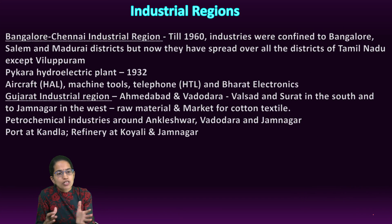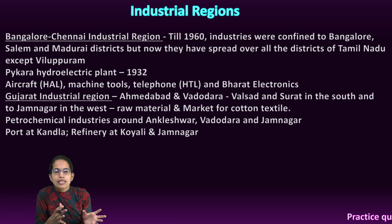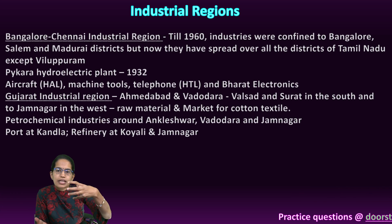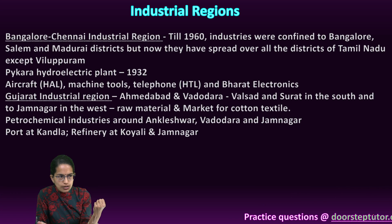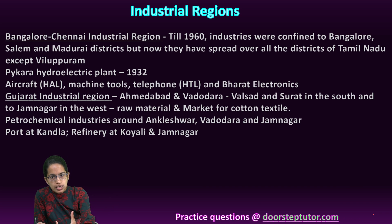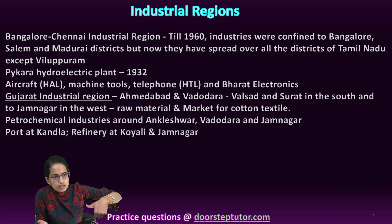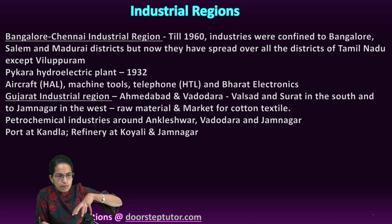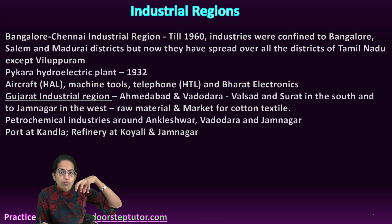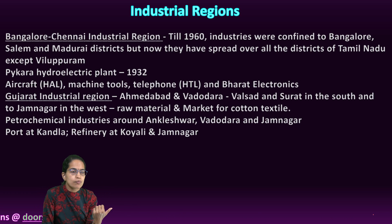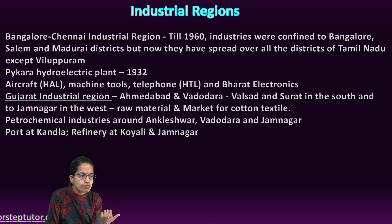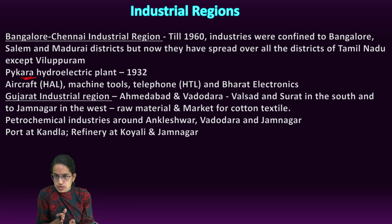The next is the Bangalore-Chennai industrial region. Till the 1960s, industries were mainly confined to the Bangalore, Salem, and Madurai areas, but slowly this whole belt started to develop. The most important hydroelectric power plant here was the Pykara hydroelectric power plant, which was established in 1932.